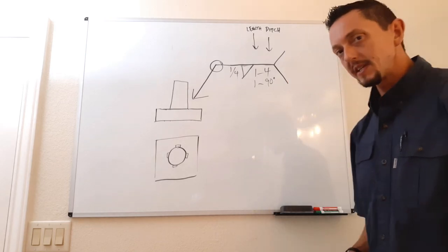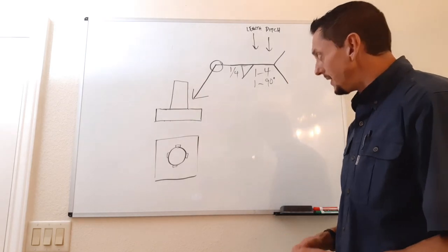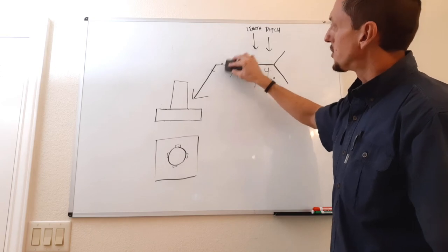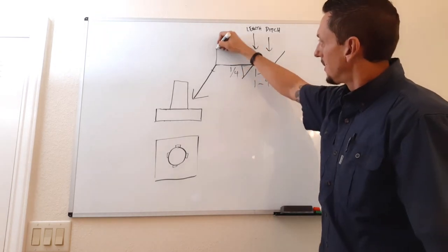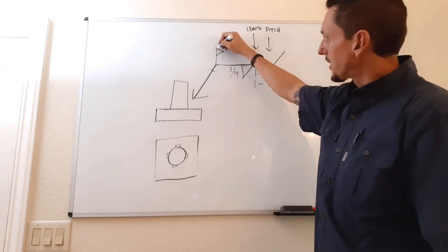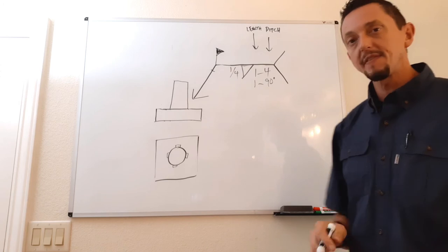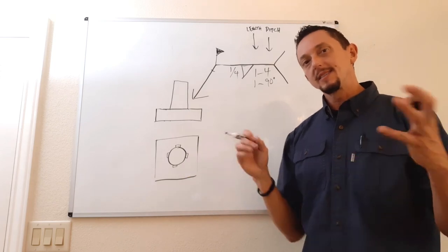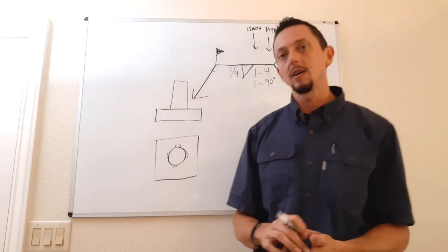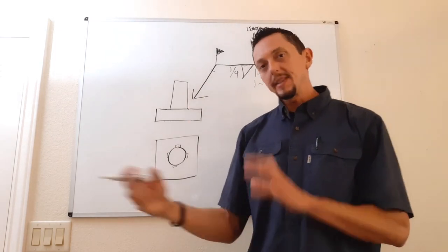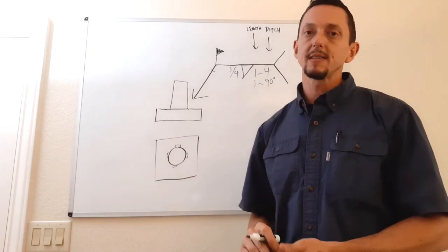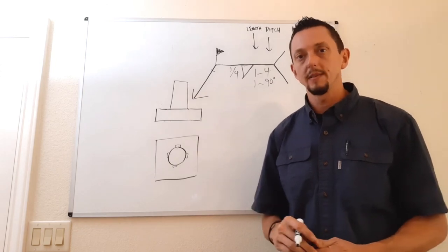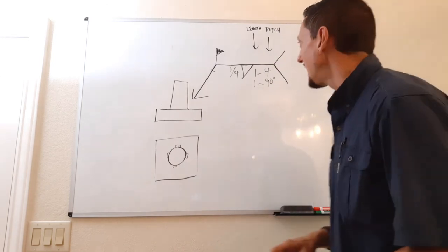There are also other supplementary symbols, like a field weld symbol — a darkened flag at the reference line — which means that weld is done in the field. Typically you'll have a shop weldment that's fabricated in the shop, and then that item is taken out and installed in the field. The field weld symbol will appear wherever it attaches to the rest of the components.